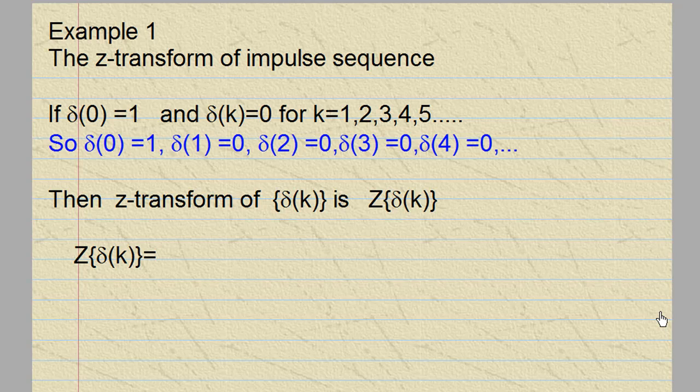Let's look at a simple example of how to compute the Z-transform of impulse sequence. If you are given a sequence δ(0) = 1 and δ(k) = 0 for k = 1, 2, 3, 4, 5, and so on, that means δ(0) = 1, δ(1) = 0, δ(2) = 0, δ(3) = 0, δ(4) = 0, and so on. This sequence is called the impulse sequence.